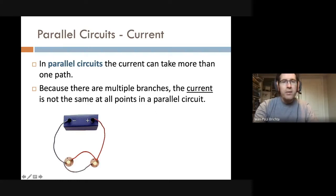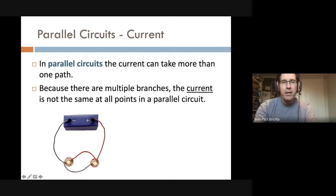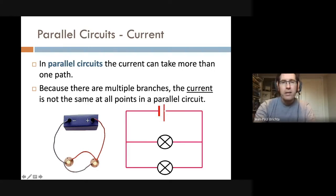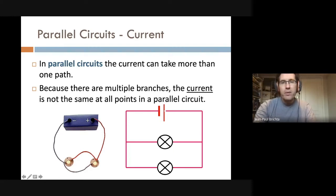In a parallel circuit, the positive terminal is connected to both lamps and the negative terminal is also connected to both lamps. Diagrammatically, from the positive terminal the current sees both lamps: it goes down the first branch through one lamp, and down the second branch through the other lamp, then both branches reconnect at the negative terminal. There are two branches in this case.